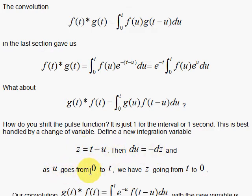And as u goes from 0 to t, we have the z going from t. When u is 0, z is t, and when u grows up to be t, z is 0.